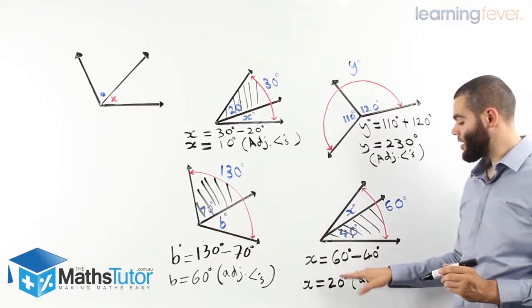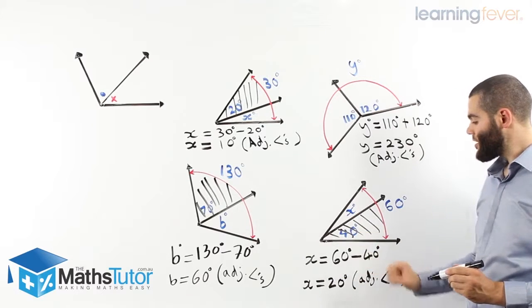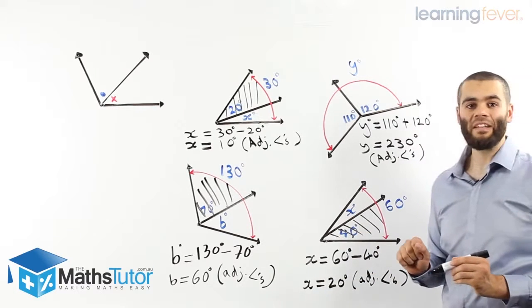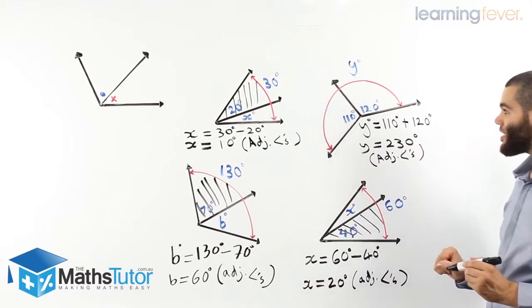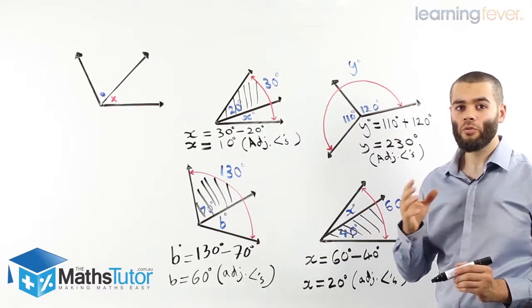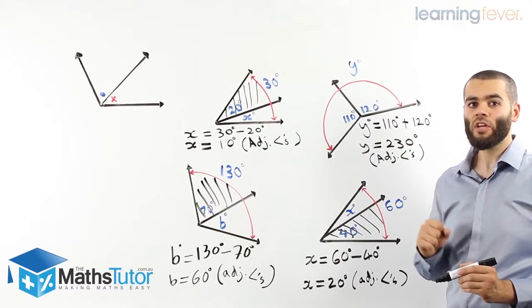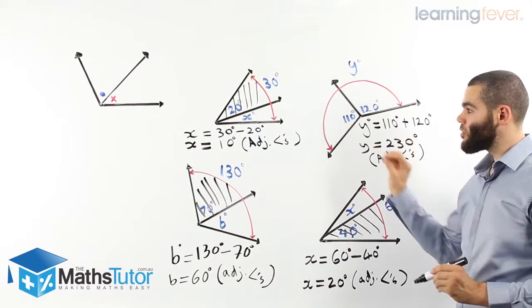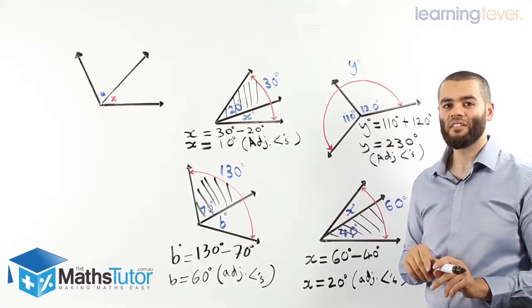We are justifying, we are saying, the reason we got this answer is because we are using the rules of adjacent angles. As you can see, very basic. We are going to learn more later on through other examples of different types of angles. This is one of them called Adjacent Angles.